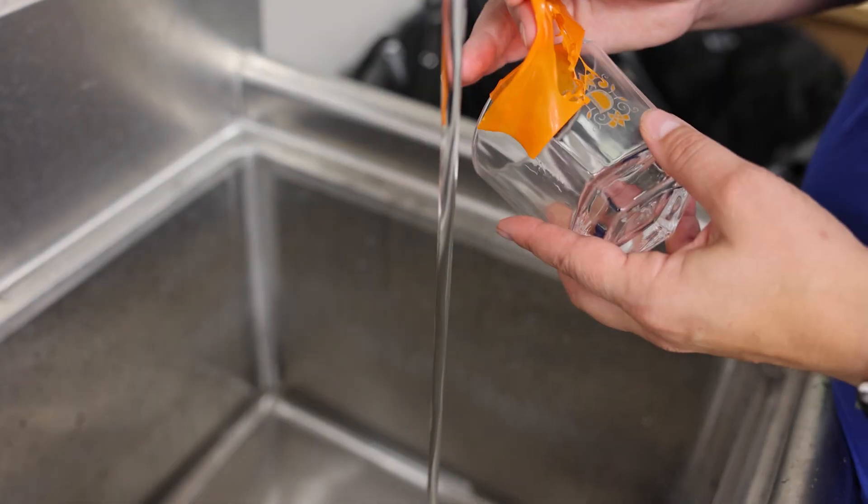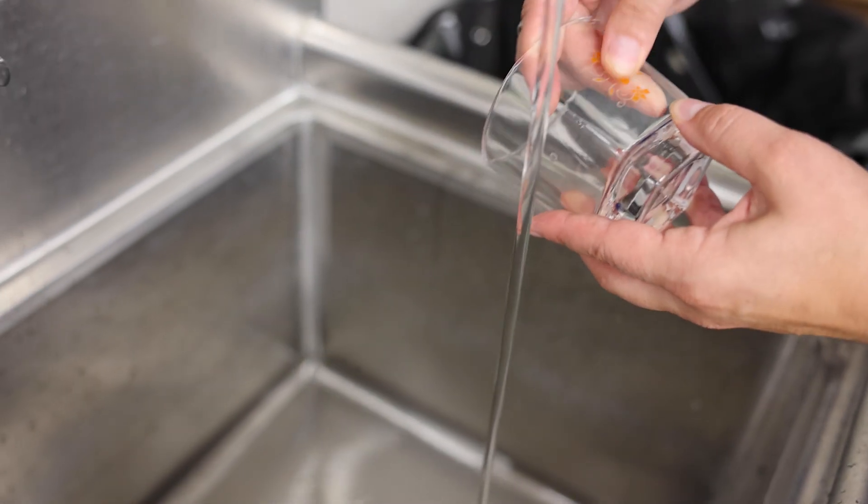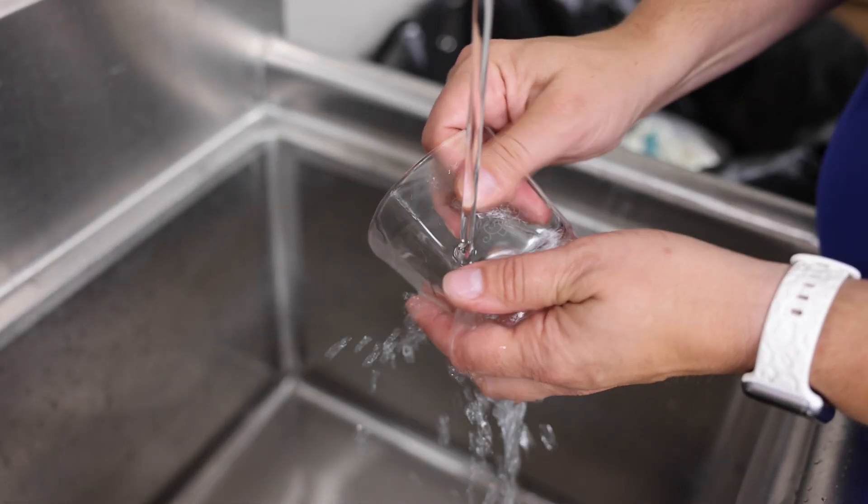Or we can just remove the Blazer Orange by hand. Something that may work better is using a little warm water and a soft, non-abrasive sponge.